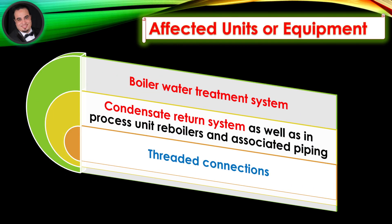Affected units or equipment: boiler water treatment system, condensate return system, as well as in-process unit reboilers and associated piping, and threaded connections.